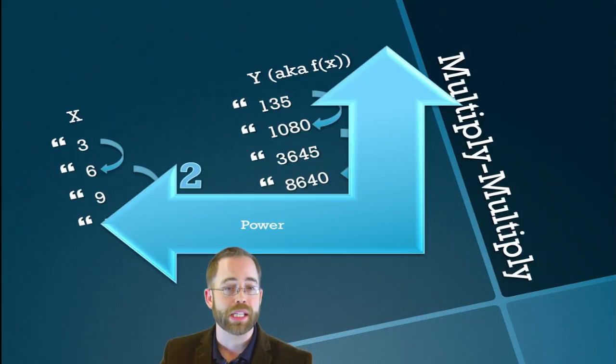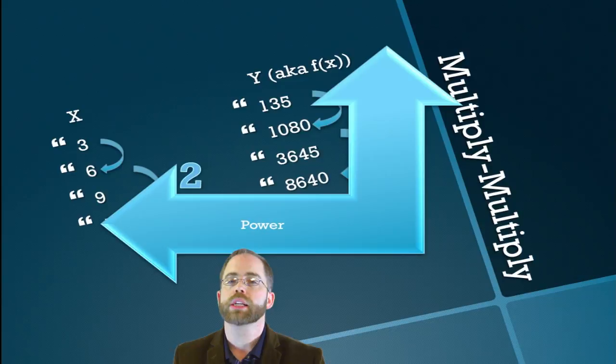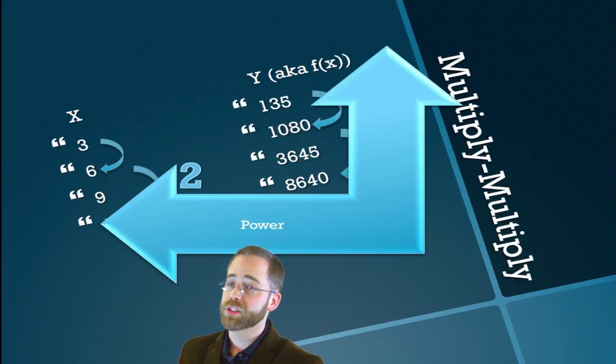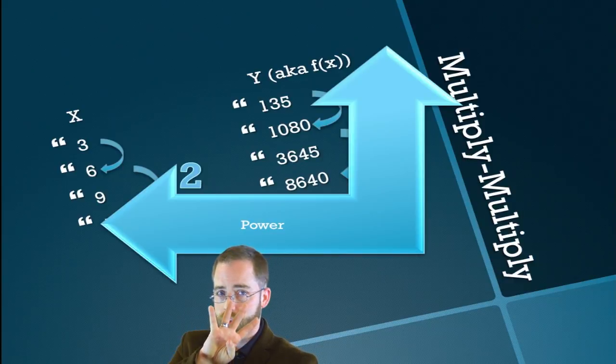So this is the multiply-multiply pattern that is indicative of power functions. A times X to the B. So this is a little bit more tricky to have to figure out. You might want to do some of the practice problems to try to get going with this. But there are a bunch of different patterns that we've got to get used to. That was number 3.